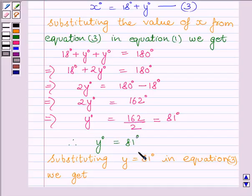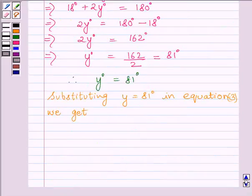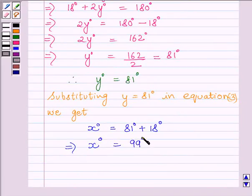Substituting the value of y in equation 3, we get x is equal to 81 plus 18 or we can say x is equal to 99 degrees.